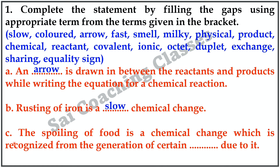C. The spoiling of food is a chemical change which is recognized from the generation of certain dot dot due to it. Answer: Smell.